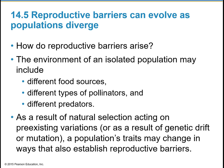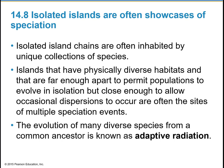How do reproductive barriers arise? The environment of an isolated population can include different food sources, different kinds of pollinators, and different predators. As a result of natural selection acting on pre-existing variations, or as a result of genetic drift or mutation, a population's traits can change in ways that also establish reproductive barriers. Isolated island chains are often inhabited by unique collections of species. Islands with diverse habitats, far enough apart for populations to evolve in isolation but close enough to allow occasional dispersions, are often sites of multiple speciation events.